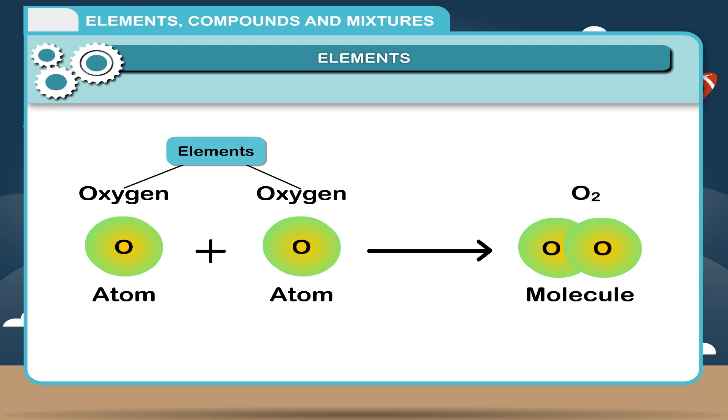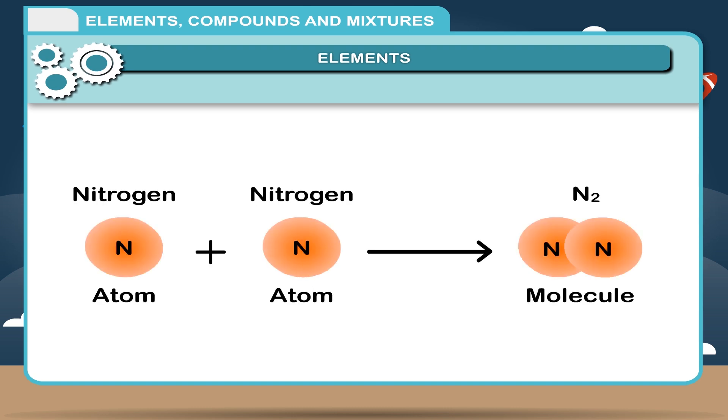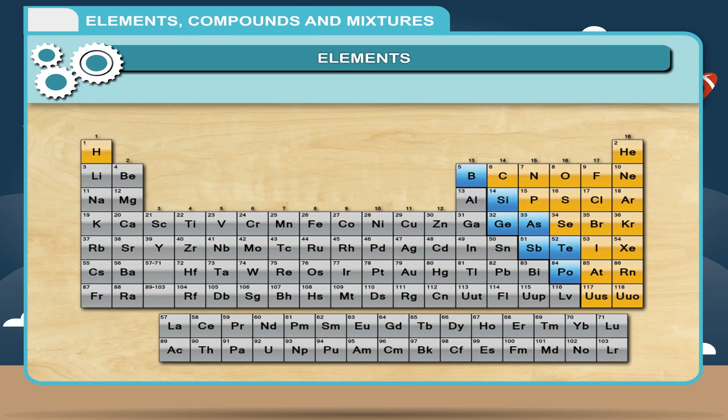Atoms of an element are similar to each other while atoms of different elements differ from each other. Of the 118 elements, 94 occur naturally on Earth. Six of these occur in extreme trace quantities.